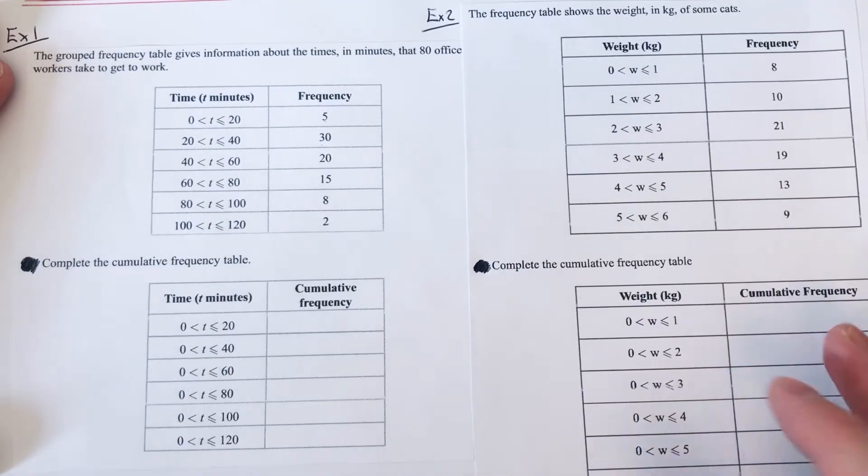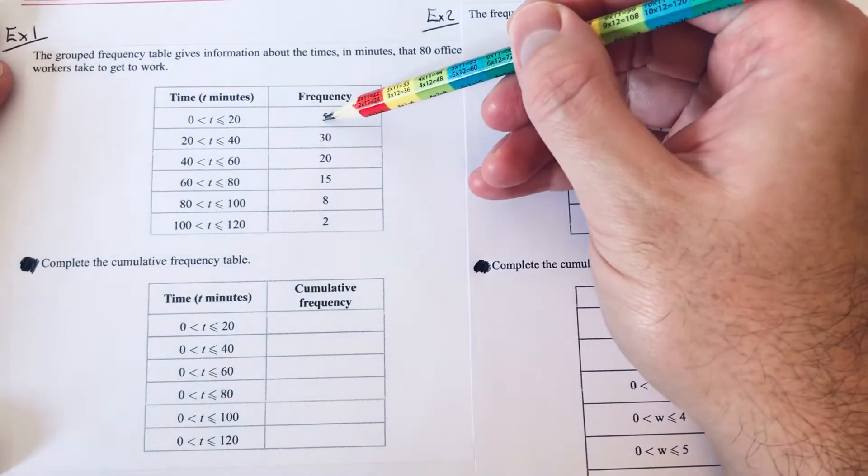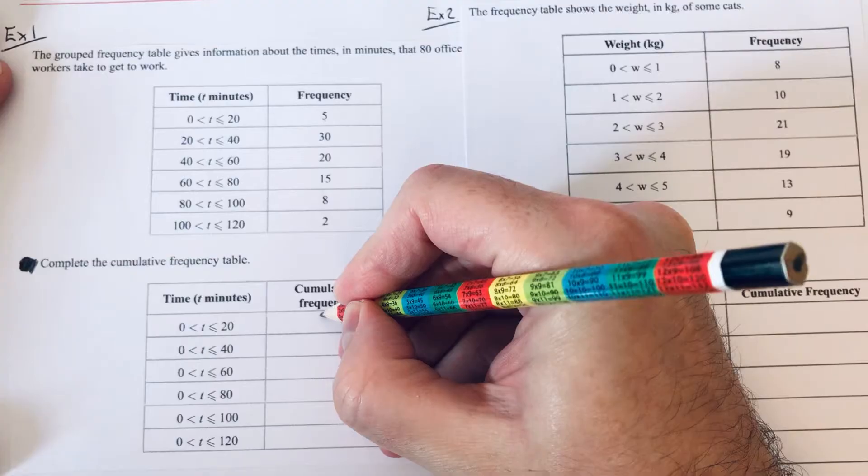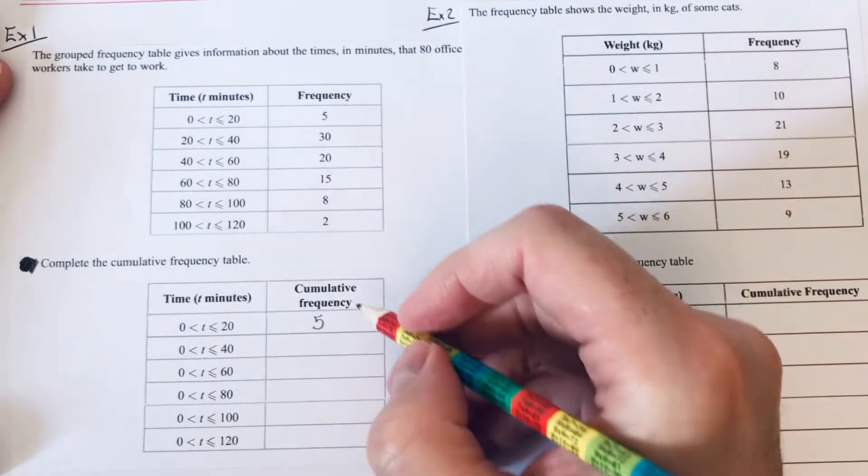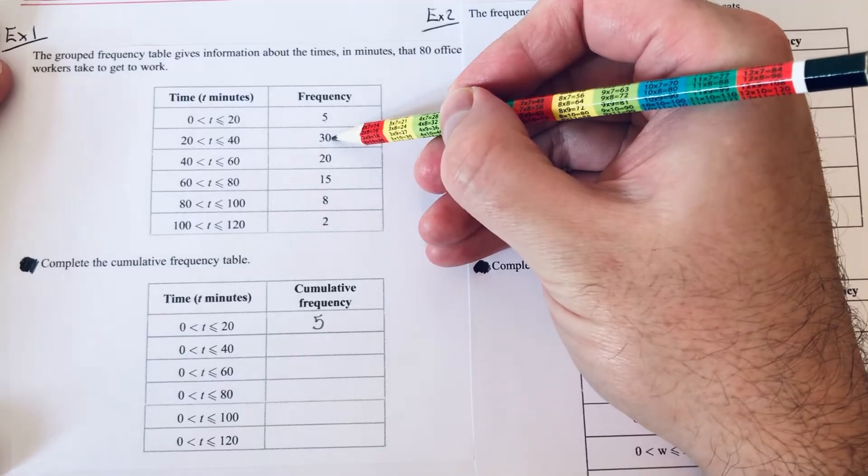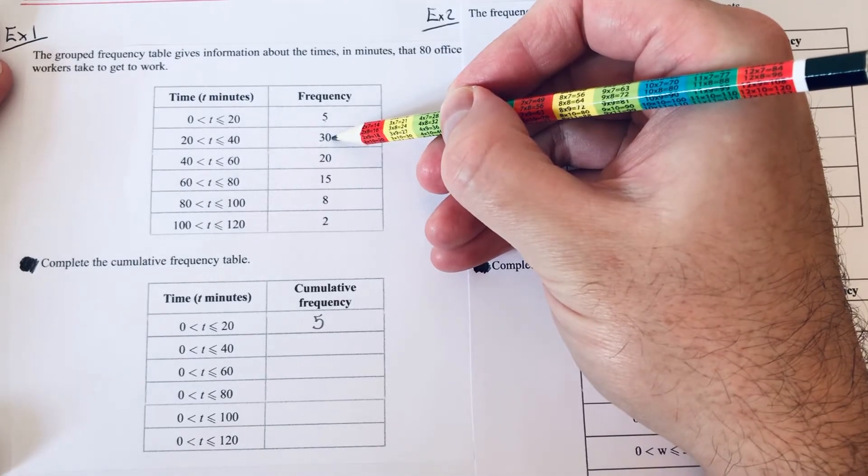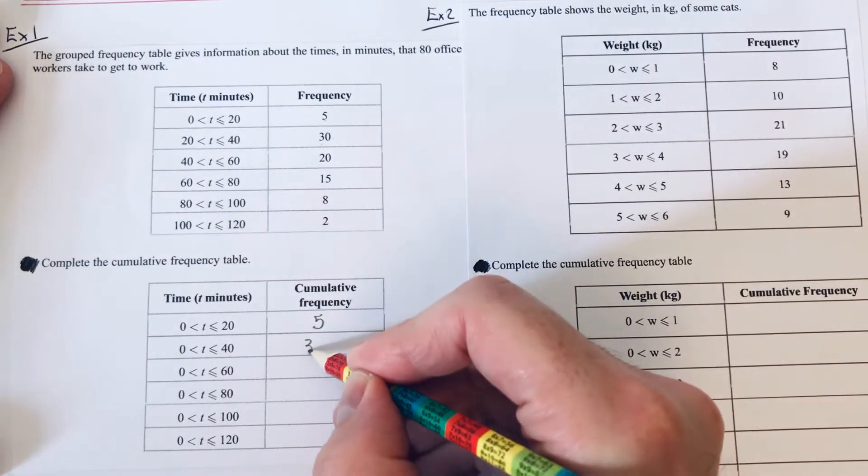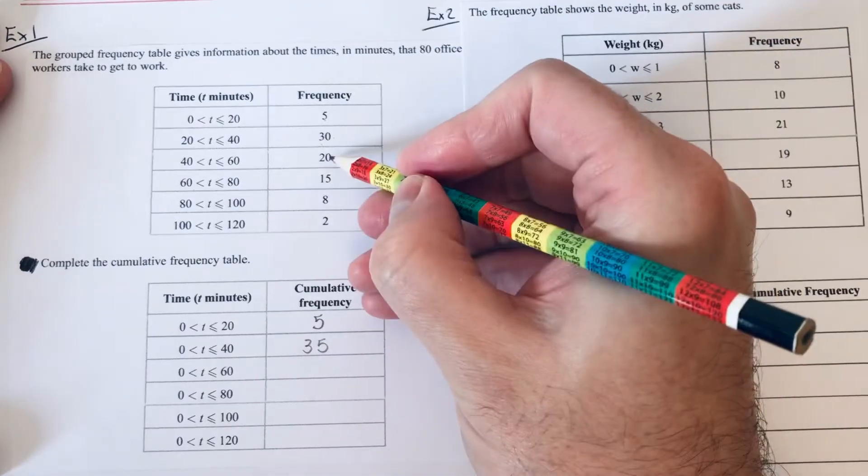We've got to complete the cumulative frequency table. So to do this, what you do is copy down the first frequency, which is 5, and then what you need to do is add on the next frequency. So 5 add 30 is 35.